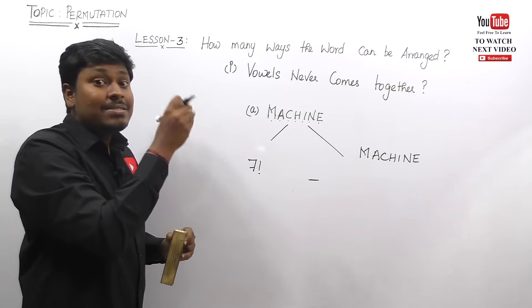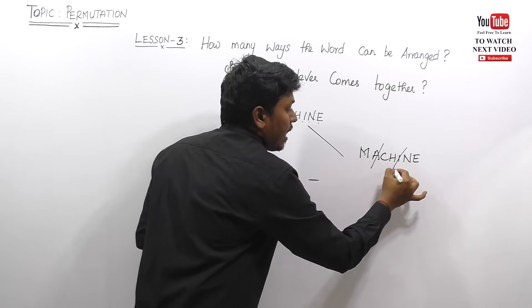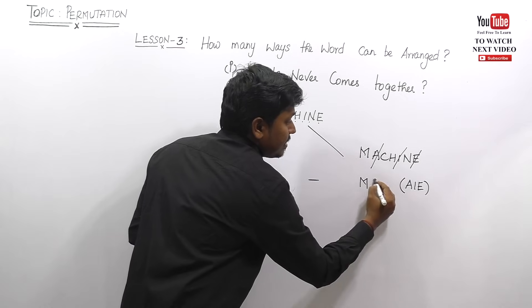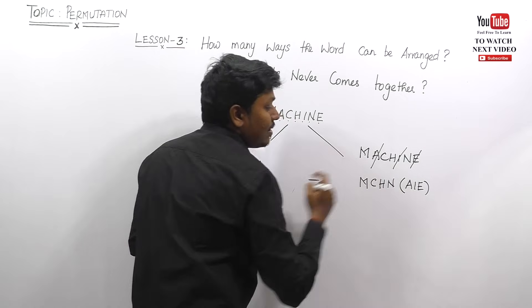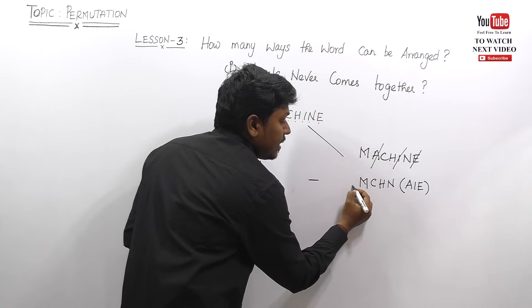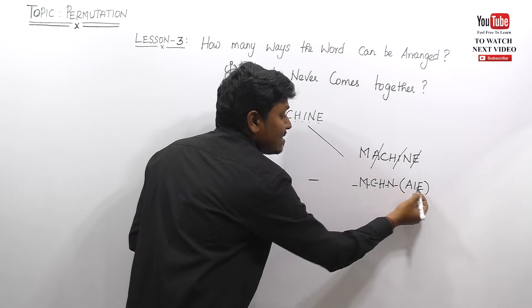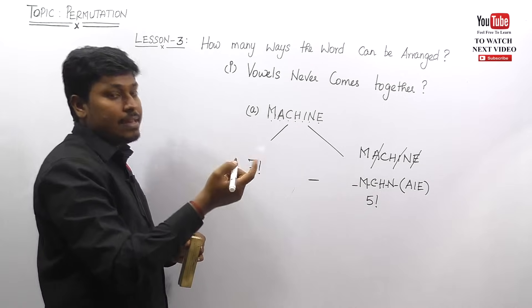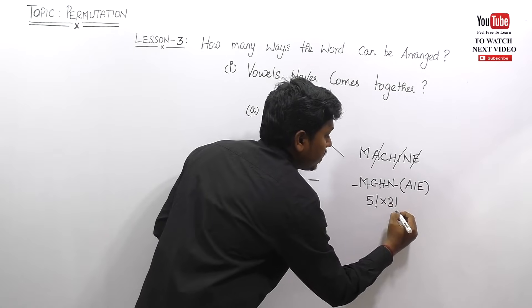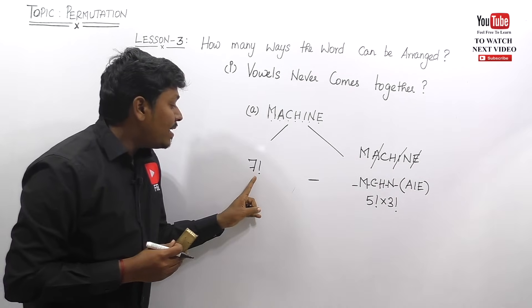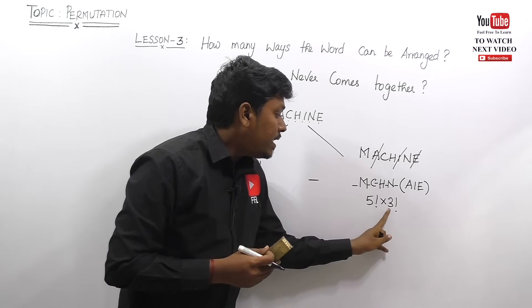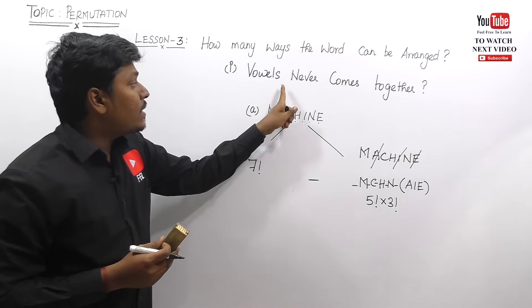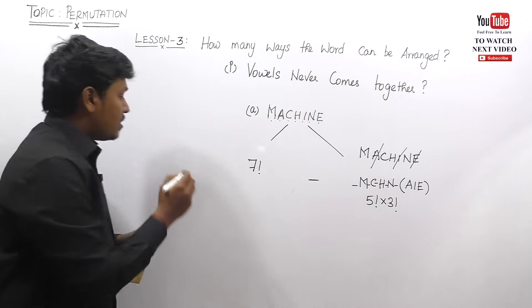For lesson two — vowels come together — for the word MISSION, we pick all the vowels: I, I, O. Place them inside a bracket, and write the remaining consonants: M, S, S, N. Count how many spaces there are: one, two, three, four, five — so five factorial. The vowels inside the bracket can be arranged in three factorial ways. So vowels-together arrangements = five factorial × three factorial.